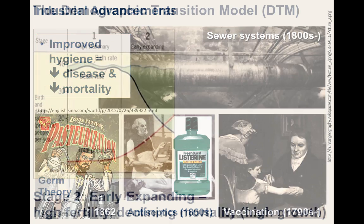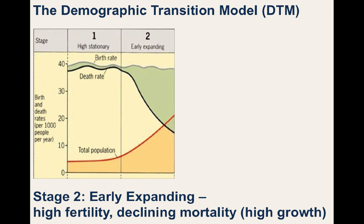Great Britain was the first country to progress into Stage 2 of the DTM, known as the Early Expanding Stage, with high birth rates and declining death rates leading to high rates of natural increase. As industrialization spread beyond the borders of Britain, other countries — first in Europe and the United States — witnessed similar demographic changes, and this data has been corroborated with numbers from these countries.